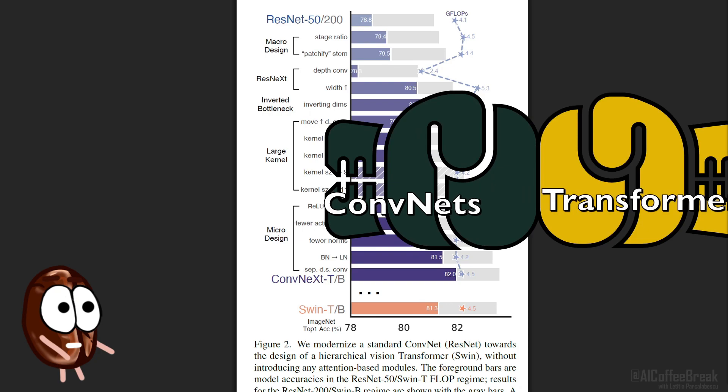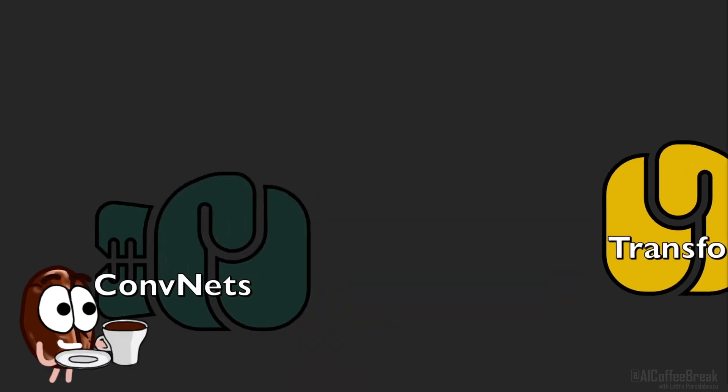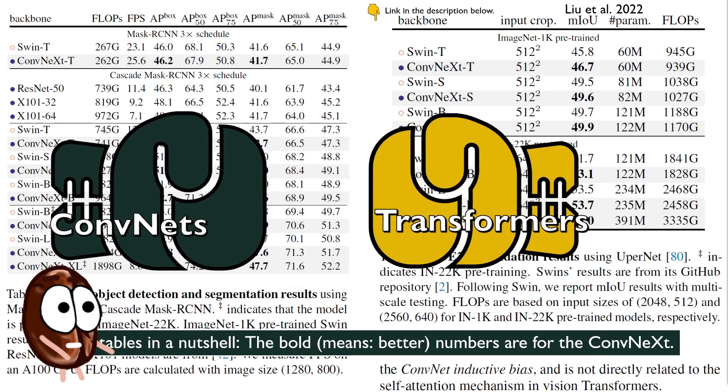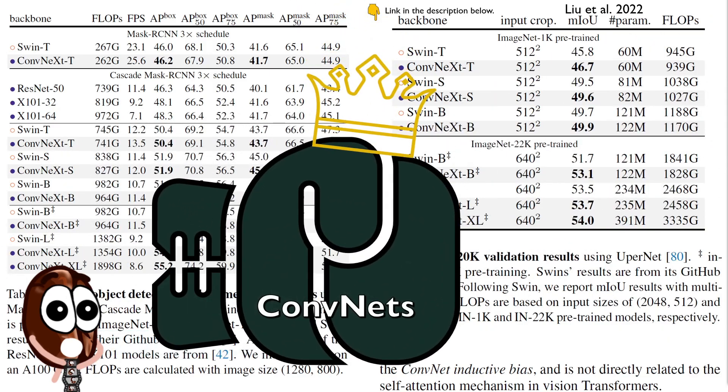And we have not discussed the data aspect I know, check out the additional experiments with more data in the paper. The second lesson is related to the tasks. ConvNets can compete in object detection and semantic segmentation with the SWIN transformer, which we remember was a hierarchical version of VIT. Maybe you are wondering what exactly the novelty of this paper is.